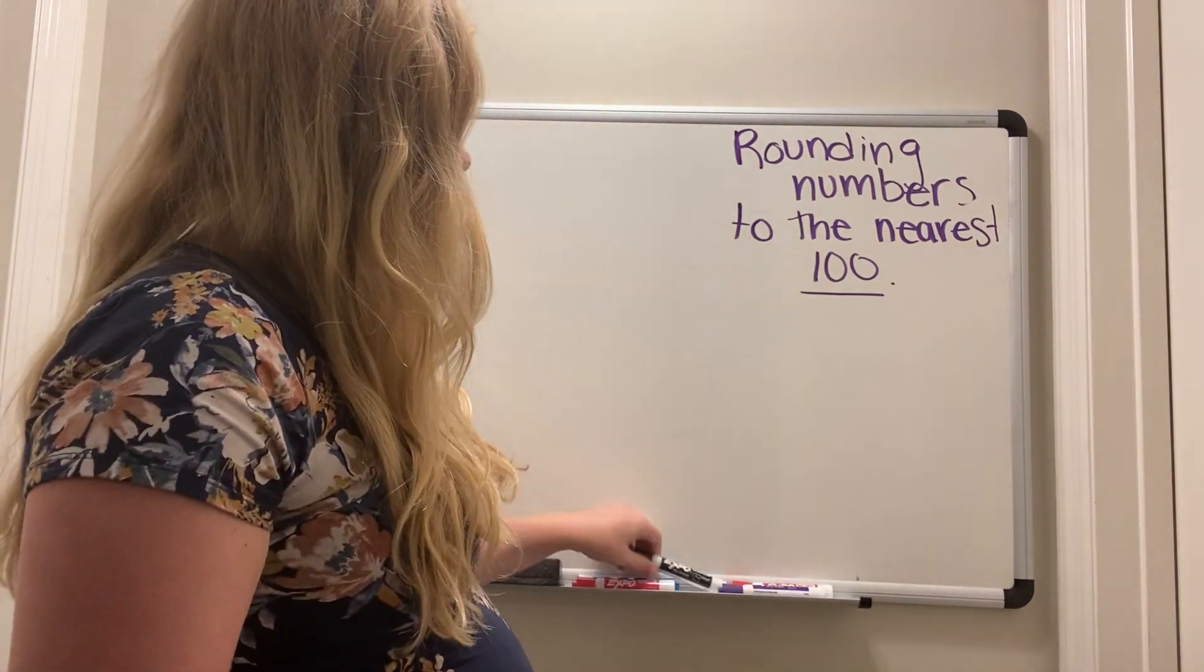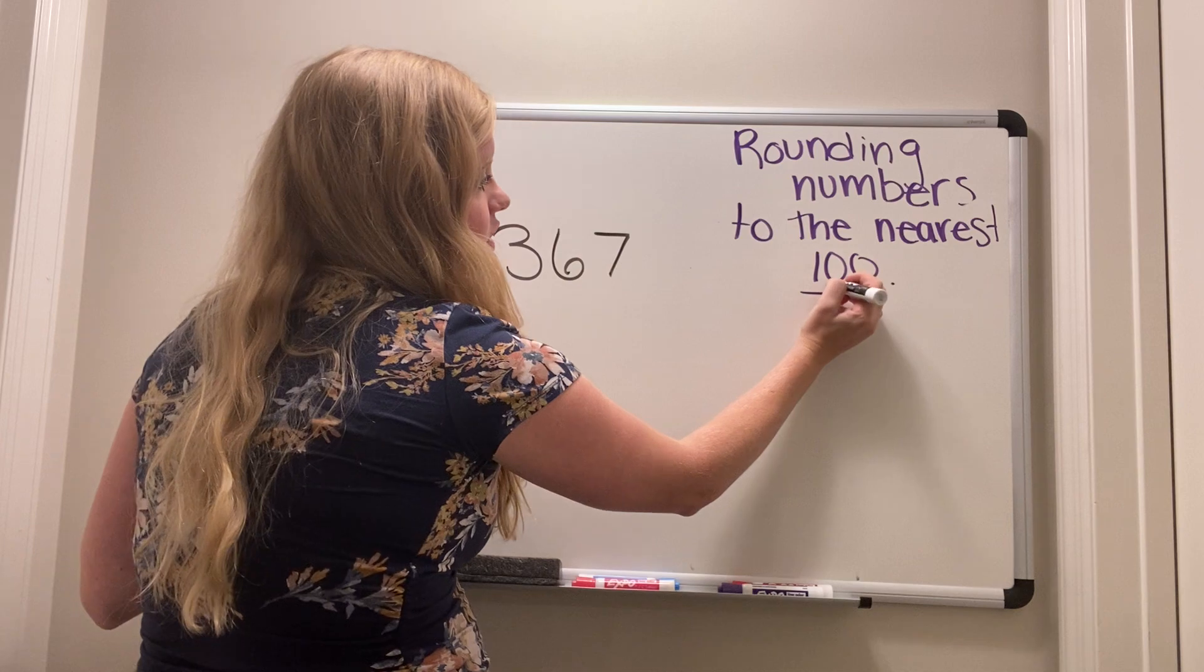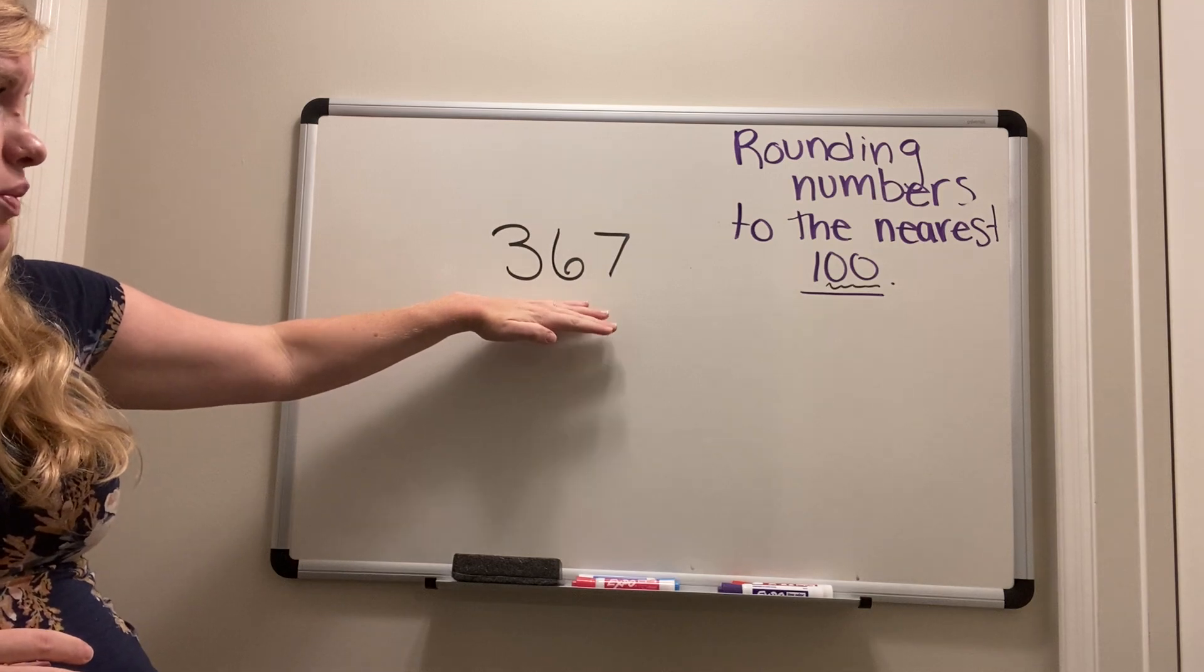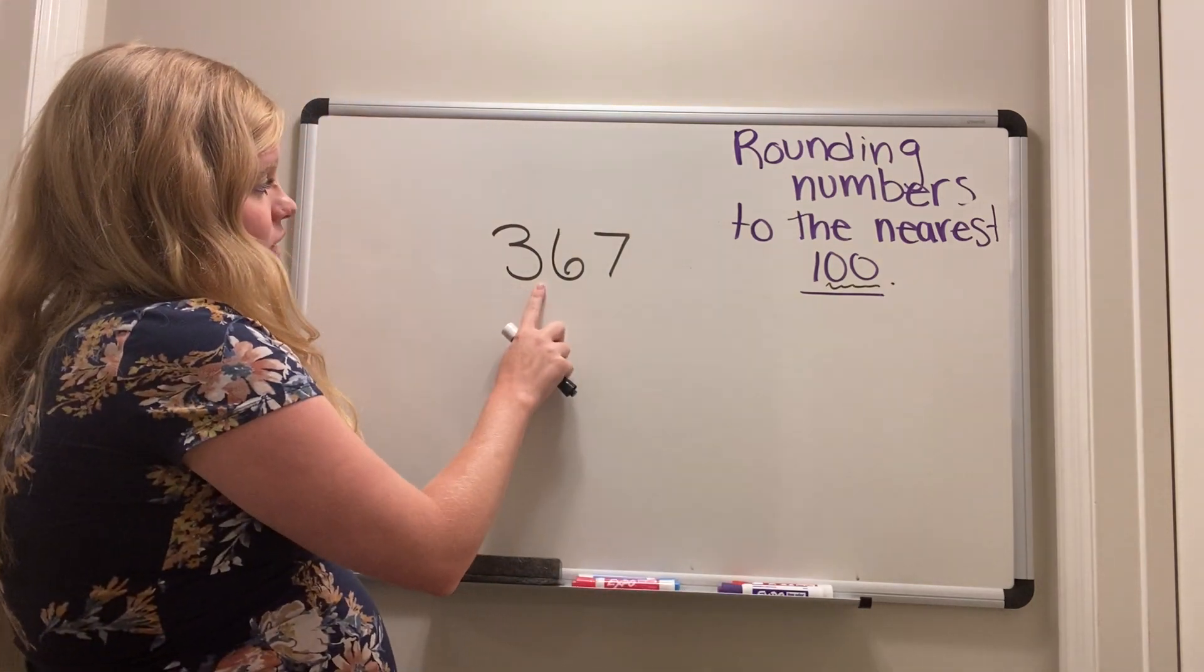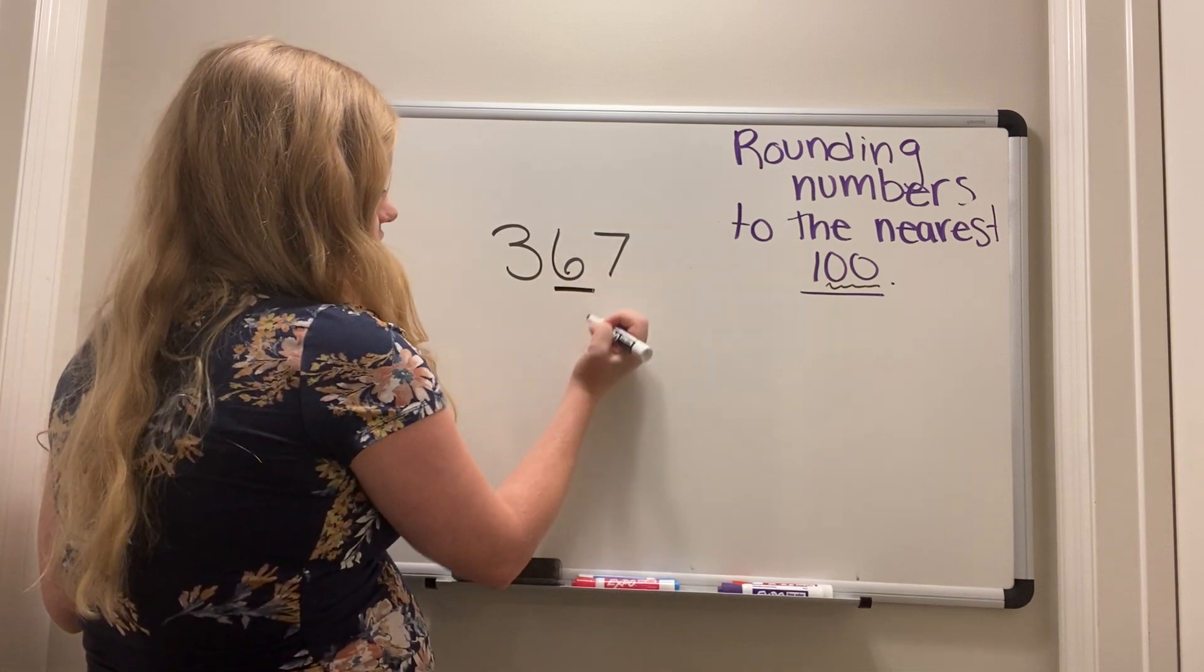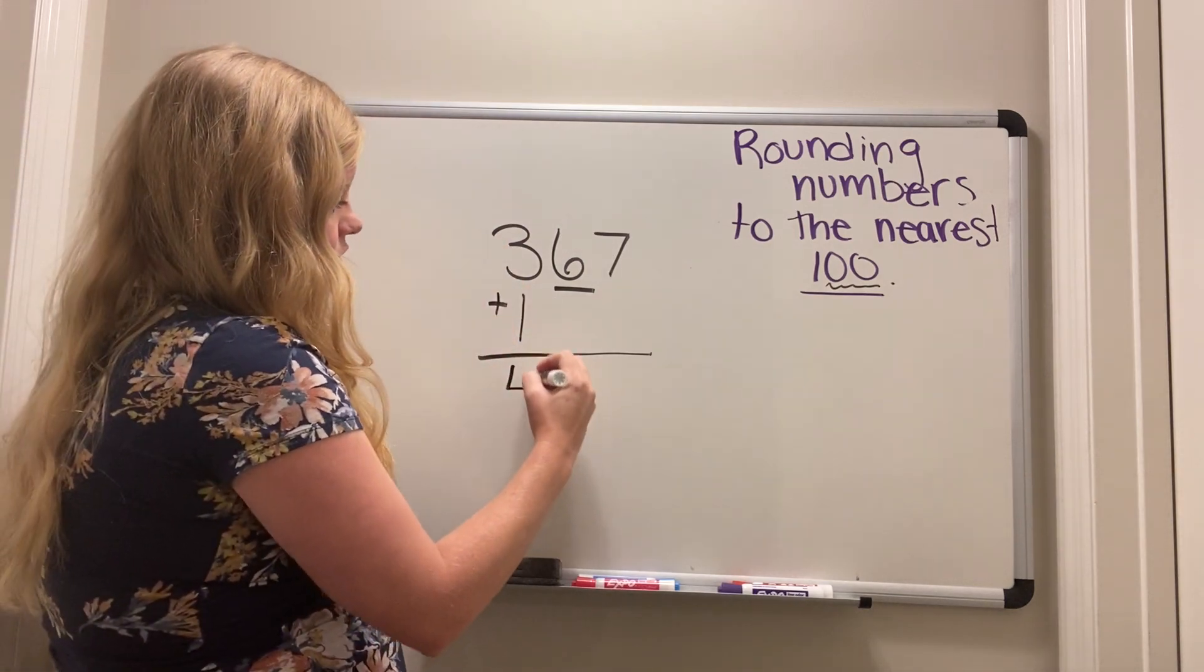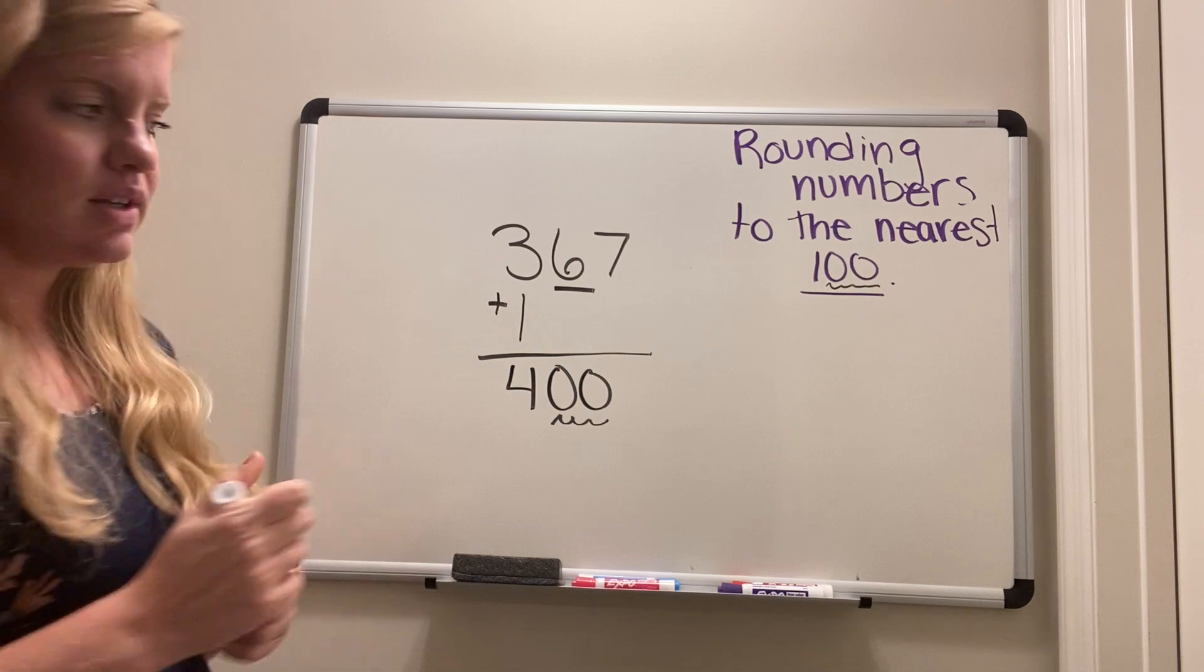So let's say we have the number 367. Do you notice that in 100 there are two zeros? When you're rounding to the nearest hundred, you always want to make sure that there's at least two zeros. So we need to decide what two hundreds is this in between. If you're a fan of the poem, you first need to, so we're rounding this number either up or keeping it the same. So you look behind, underline. Five or more, you add one more. Is this above a five? Yes. So this 300 becomes a 400. And then remember, we want to make sure that there are two zeros at the end.